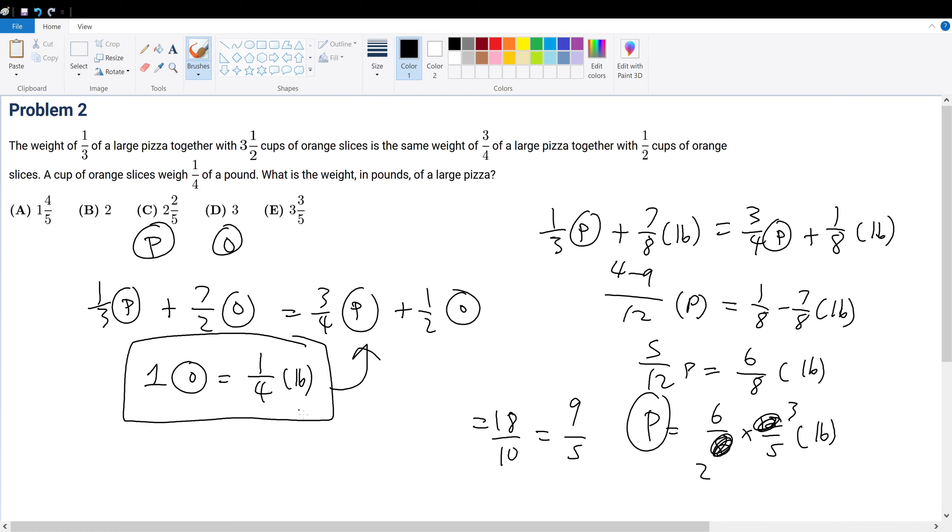Nine over five expressed in mixed fractions is one and four-fifths. Therefore, your answer choice is answer choice A.